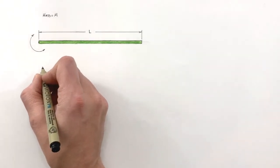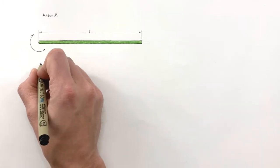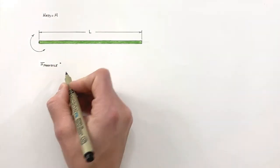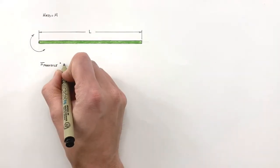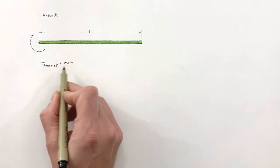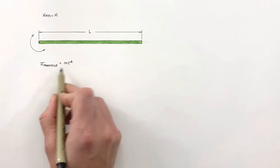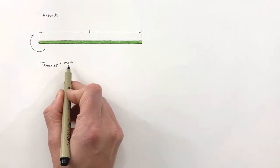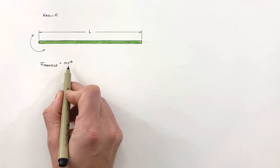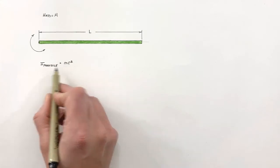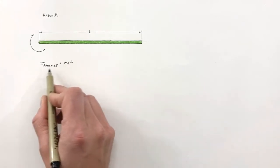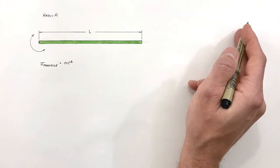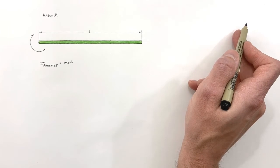Now we know the moment of inertia of a particle is given by the equation mr², where m is the mass of the particle and r is the distance between the particle and the axis of rotation. If you want to see this derived, click up here and you can see where it comes from.